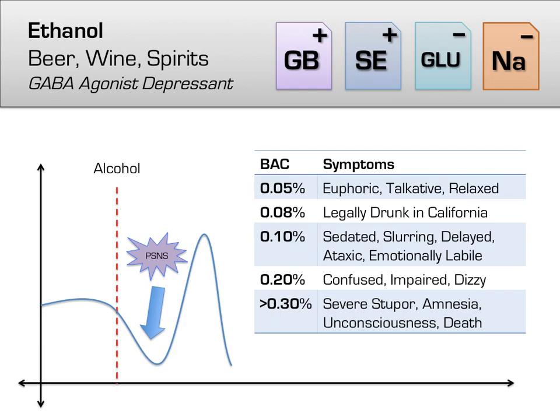Past a blood alcohol content of 0.3, severe stupor, unconsciousness, respiratory depression, and potentially even death can occur.